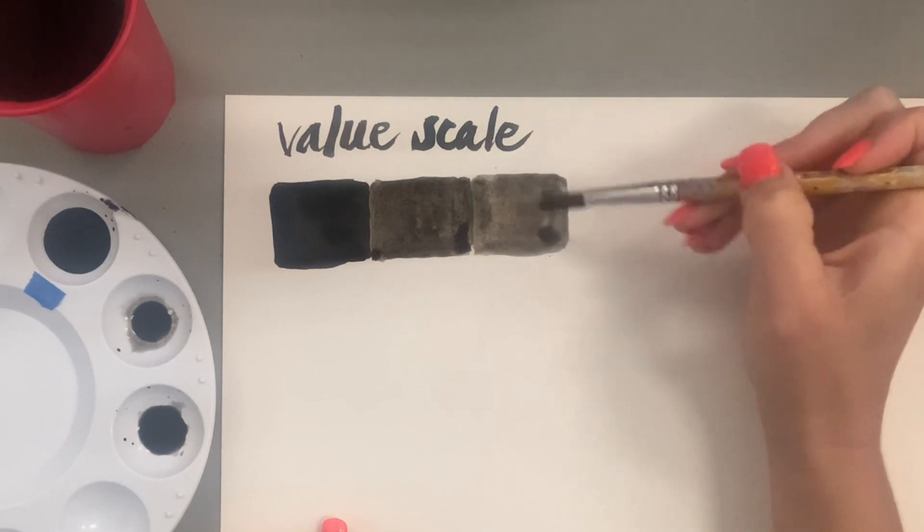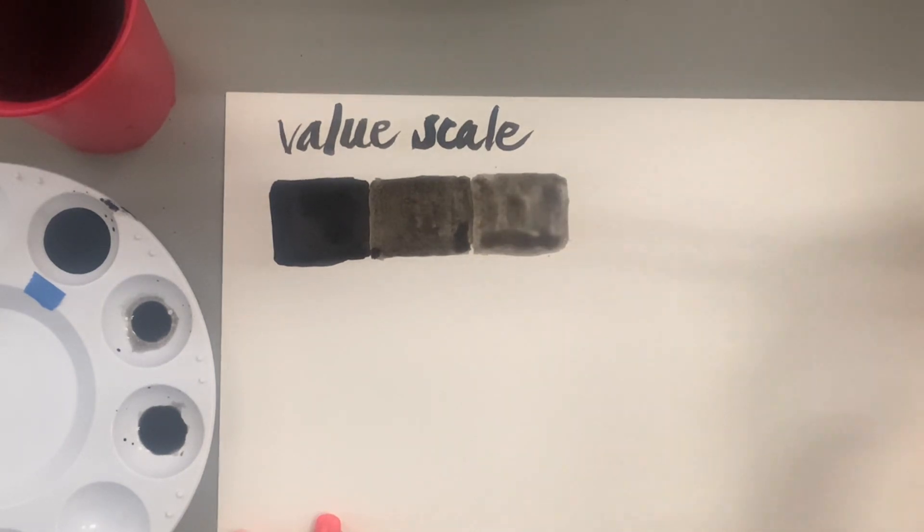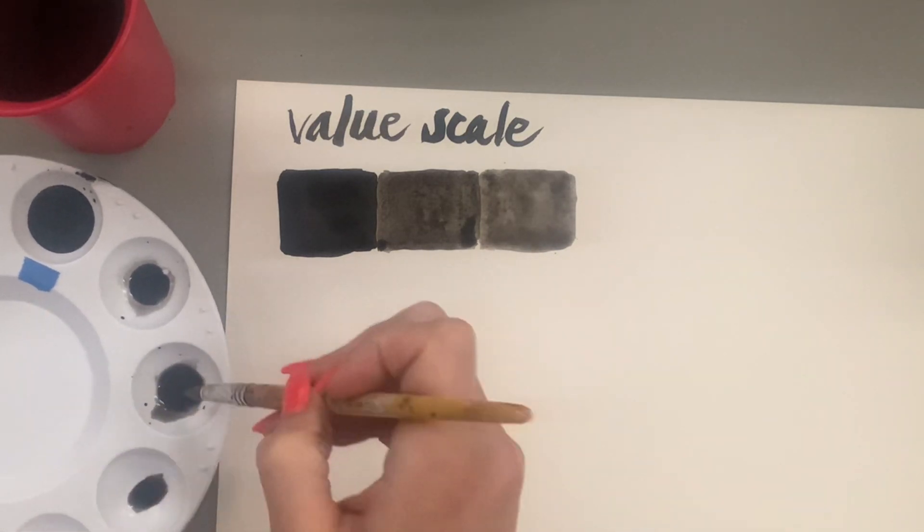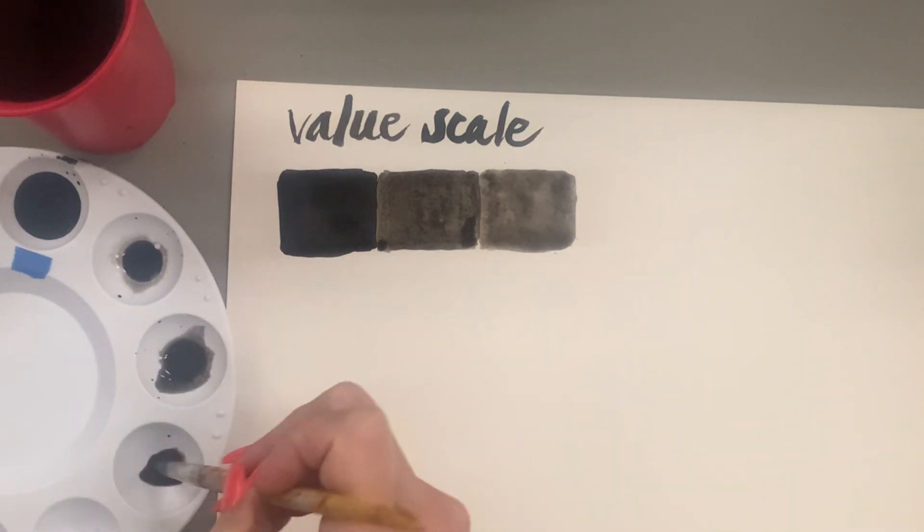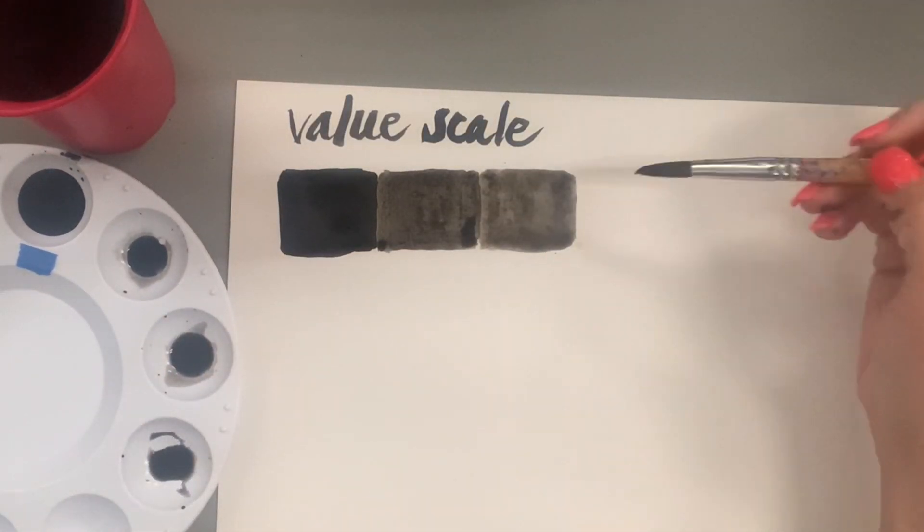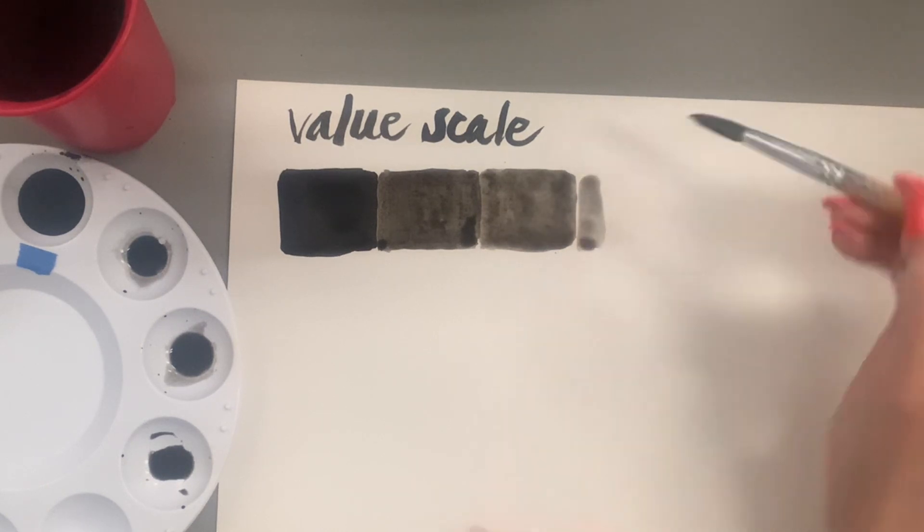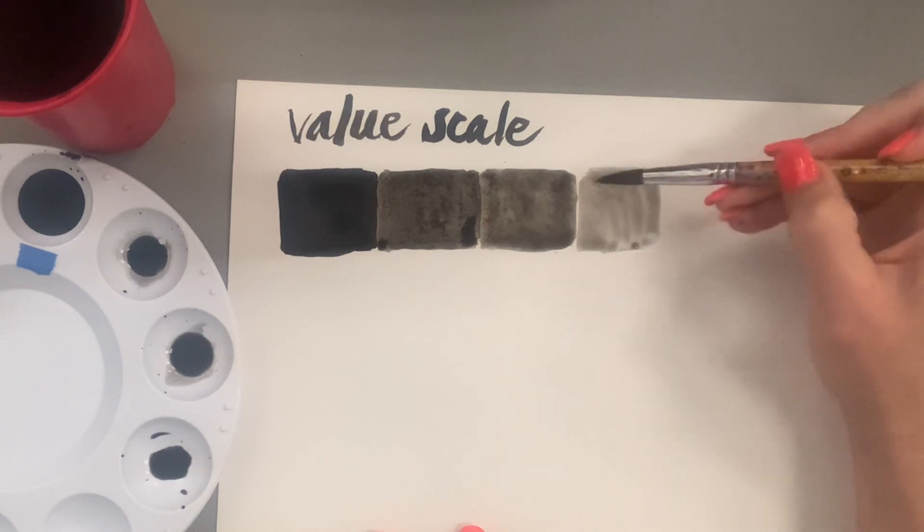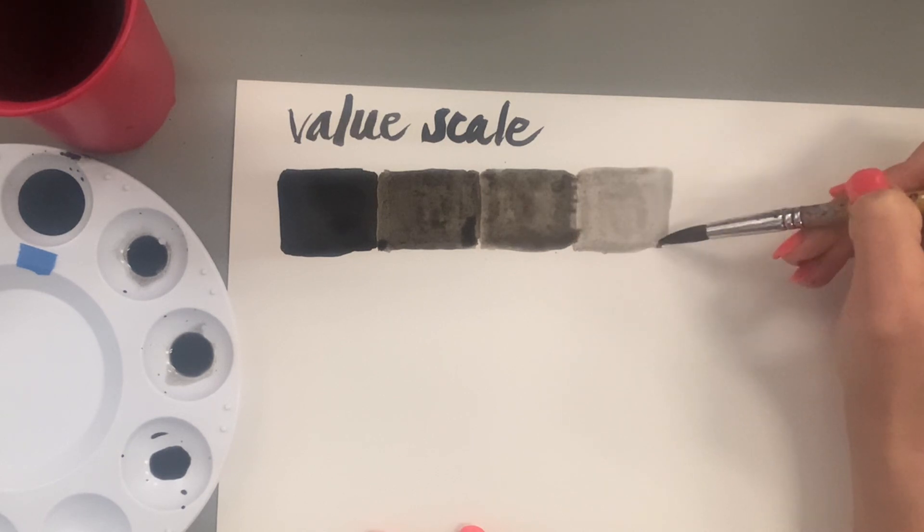I want to make sure that each of my sections are kind of the same size and shape. I did add a little bit of water to my brush and you can see I'm just carefully and slowly connecting. Now these two values are pretty similar, it does get progressively lighter. I'm going to focus on doing a five or seven-step value scale. We'll kind of see where I end up. You could do as many values as you could create, even a 20-step value scale.